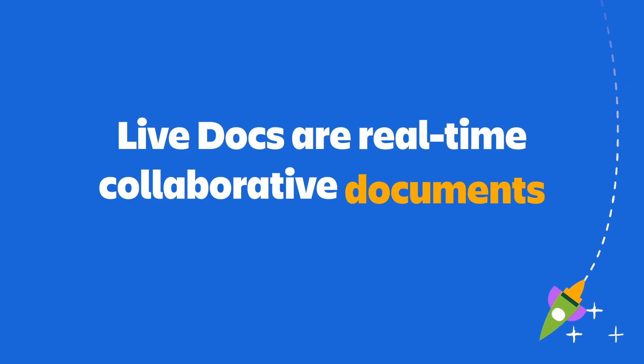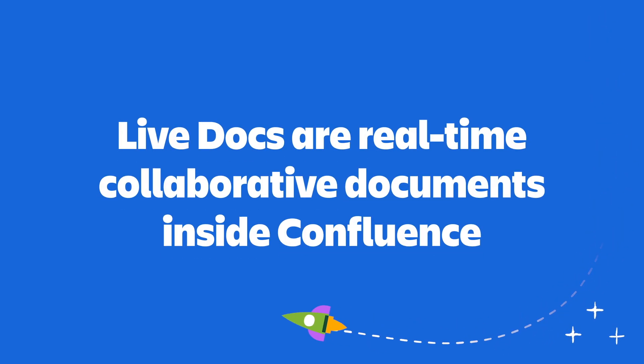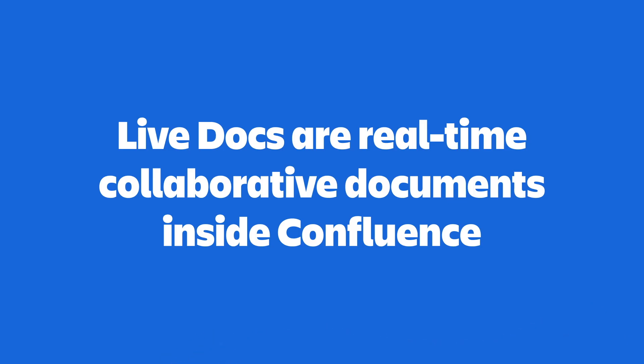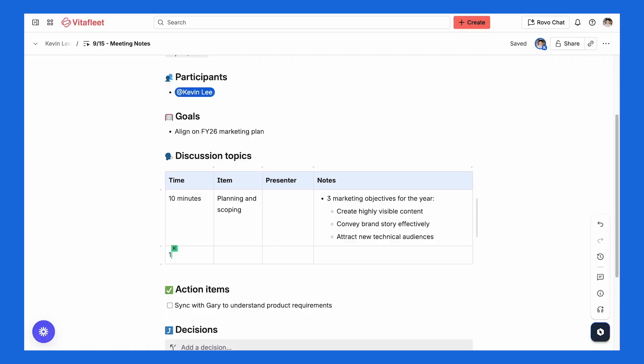What are Confluence Live Docs? Simply put, Live Docs are real-time collaborative documents inside Confluence. This means that you and your teammates can work on them together at the same time. You'll see typing and edits happen instantly, which makes teamwork smooth and easy.